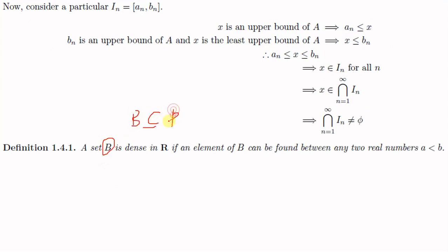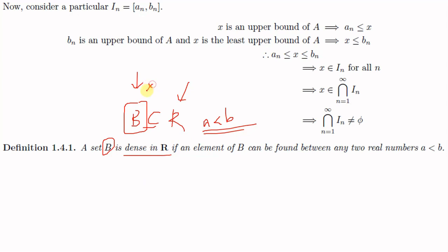We now have a definition. Let B be a subset of the set of real numbers. Then we say that B is dense in ℝ if we can find an element of B in between any two elements of ℝ. That means, given any two elements a and b of ℝ with a < b, it should be possible to find an element x in B such that a < x < b. If such an x exists in B, we say B is dense in ℝ.